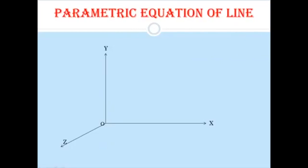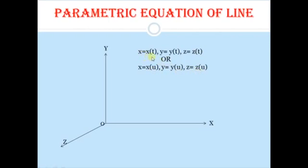First, what is meant by a parametric equation? If we consider any point P in a three-dimensional coordinate system whose position changes from one point to another depending on some parameter t, we can write the point in terms of that parameter: x as x(t), y as y(t), and z as z(t). Similarly, if we use parameter u, we write x(u), y(u), z(u). The coordinates x, y, z are each functions of that parameter.